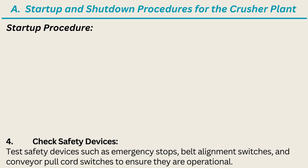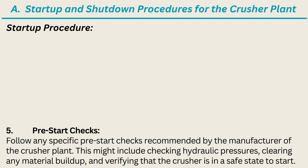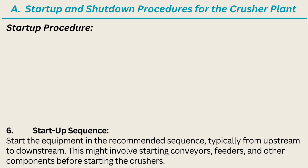4. Check safety devices. Test safety devices such as emergency stops, belt alignment switches, and conveyor pull cord switches to ensure they are operational. 5. Pre-start checks. Follow any specific pre-start checks recommended by the manufacturer of the crusher plant. This might include checking hydraulic pressures, clearing any material buildup, and verifying that the crusher is in a safe state to start. 6. Start up sequence. Start the equipment in the recommended sequence, typically from upstream to downstream. This might involve starting conveyors, feeders, and other components before starting the crushers.